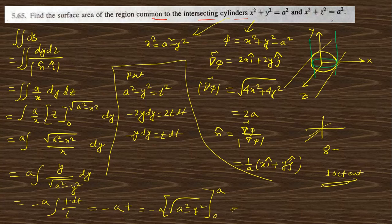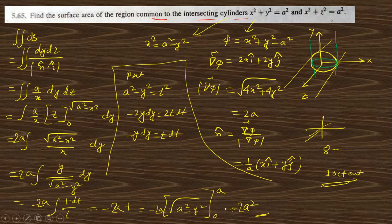There is a missing factor of 2 due to the symmetry of z — there are two sides, so a factor of 2 appears, giving 2a². For the first octant the result is 2a², so for the total surface area across all 8 octants: 8 × 2a² = 16a². This is the answer to problem 5.65.